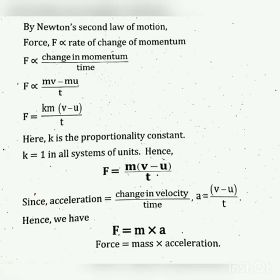Consider an object of mass M moving with the initial velocity U. After some time, its velocity changes into V. The initial velocity is U and the final velocity is V. Momentum is the product of mass into velocity. So, the initial momentum is M into U, and the final momentum of the object is equal to M into V.